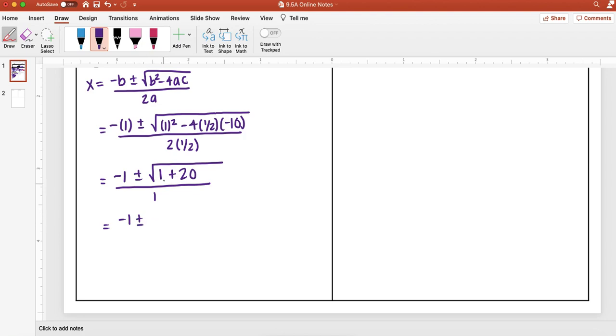So I get negative 1, plus or minus 1, plus 20 is 21, over 1.